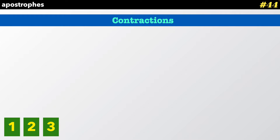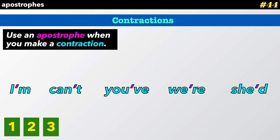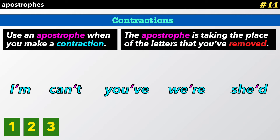Number one: contractions. Use an apostrophe when you make a contraction. These are contractions when you take two words to make a new one.